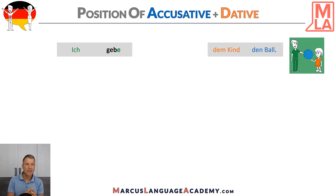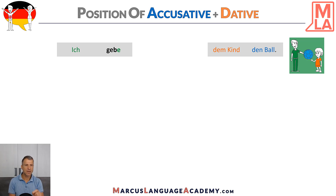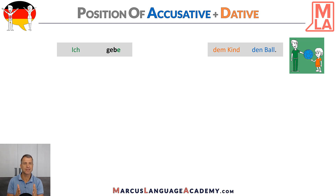'Dem Kind' is dative because it's the indirect object — the kid has the benefit of the action. So it's dative. 'Den Ball' is accusative — it's the direct object, it's part of the action because I give the ball. So normally when we have nouns like 'Kind' and 'Ball', dative goes first and then accusative: 'dem Kind den Ball'. It has to be like this.